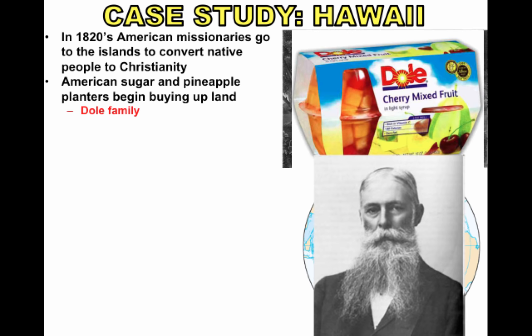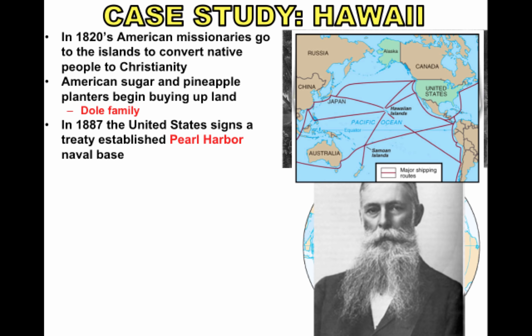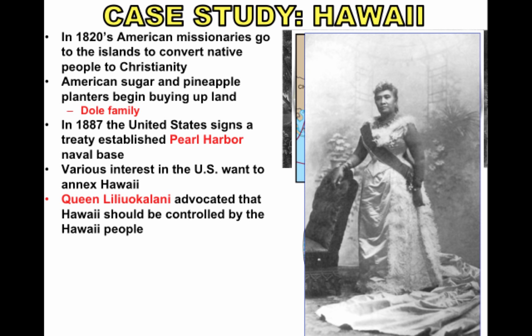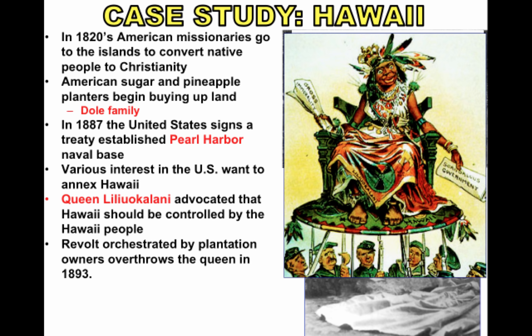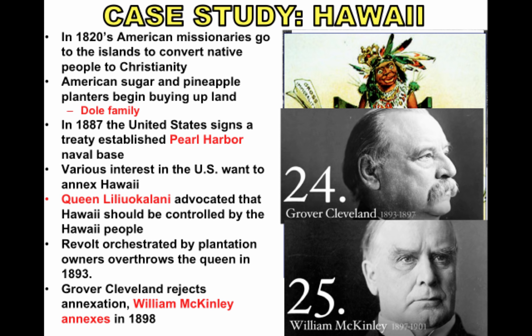In 1887, the United States signs a treaty establishing the naval base at Pearl Harbor, and there were all these different interests in the U.S. wanting to annex Hawaii. The problem is the people in Hawaii didn't want to be annexed. Queen Liliuokalani advocated that Hawaii should be controlled by the Hawaiian people. A revolt was orchestrated by plantation owners to overthrow her in the 1890s. Grover Cleveland rejected annexation, but all that debate came to an end when Hawaii was annexed in 1898 under William McKinley.